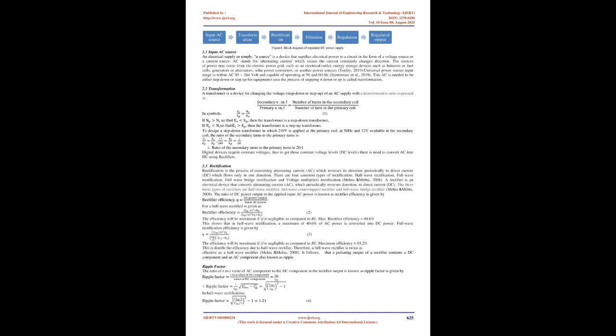A power supply is an electrical device that supplies electric power to an electrical load. There are two types of power supplies: AC and DC power supply. DC power supply which maintains the output voltage constant irrespective of AC mains fluctuations or load variations is known as regulated DC power supply. DC power supply in which output voltage changes due to variation in the input AC voltage is known as an ordinary or unregulated DC power supply, which is unreliable for the operation of electronic circuits and therefore needs to be regulated.